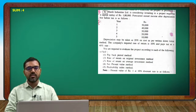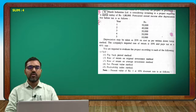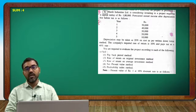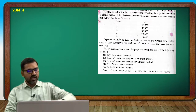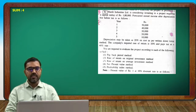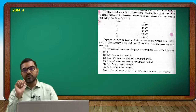Hars Industries Limited is considering investing in a project requiring a capital outlay of rupees one lakh. The capital investment for the project is one lakh rupees. The forecasted annual income is given after depreciation but before tax.